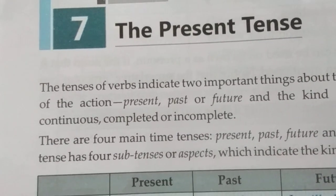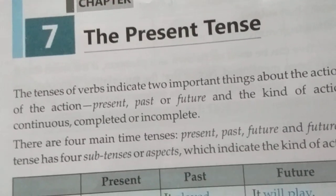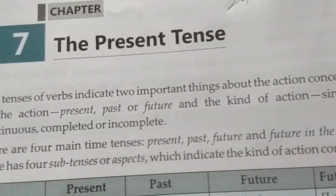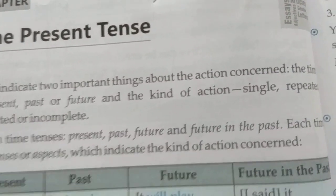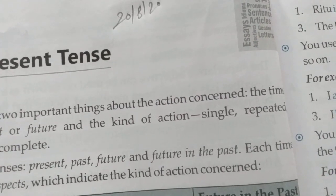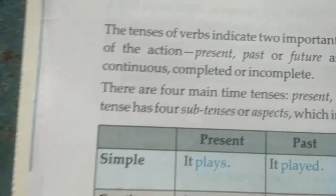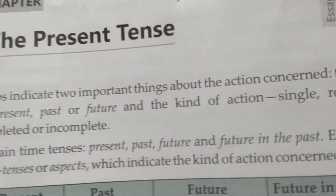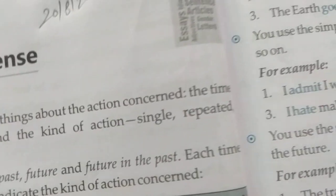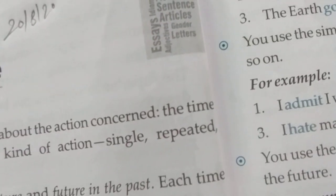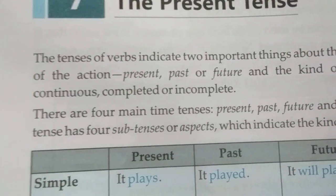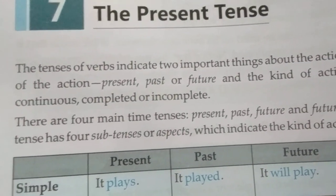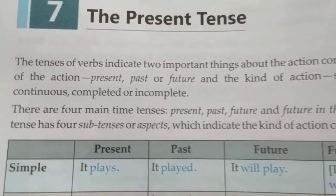The tense of verbs indicates two important things about the action: the time of the action — present, past, or future — and the kind of action — single, repeated, continuous, completed, or incomplete.